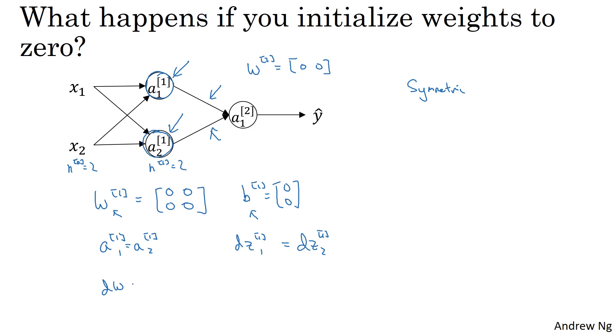It's possible to show that dw will be a matrix that looks like this, where every row takes on the same value. So when you perform a weight update, w1 gets updated as w1 minus alpha times dw, you find that w1, after every iteration, will have the first row equal to the second row.